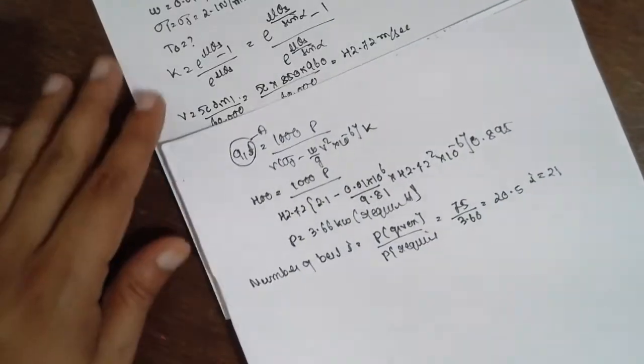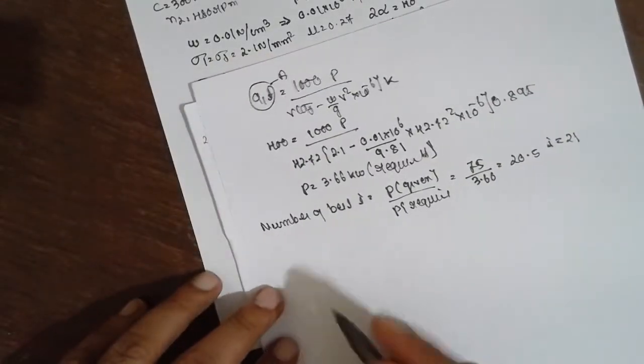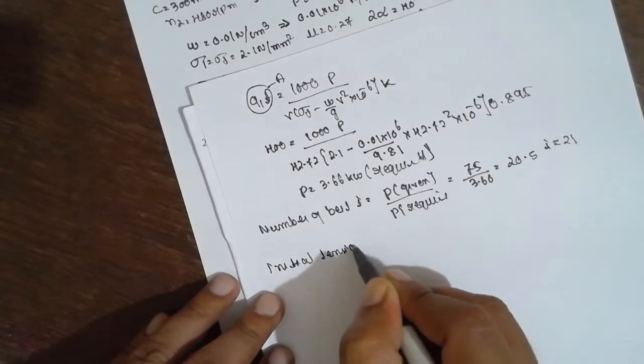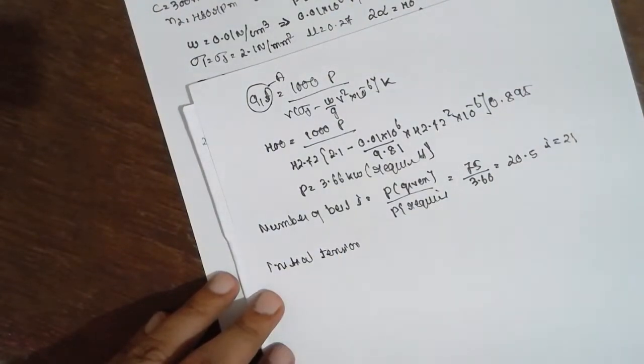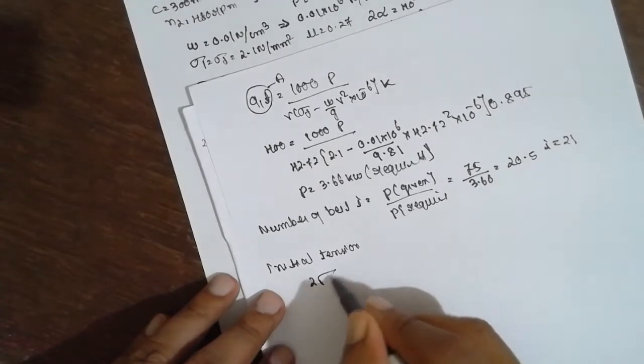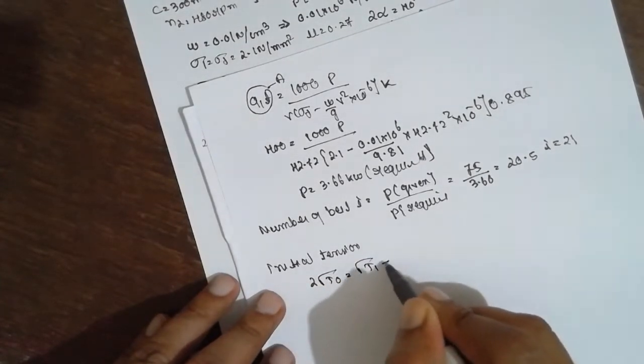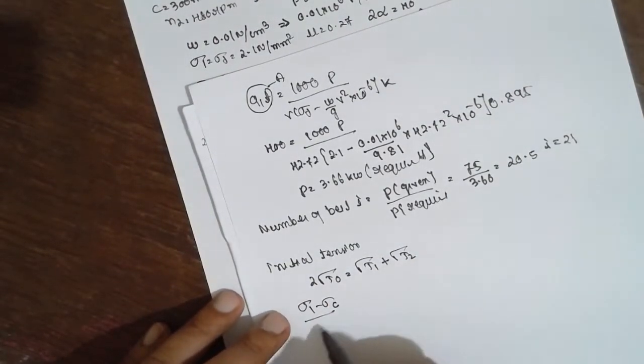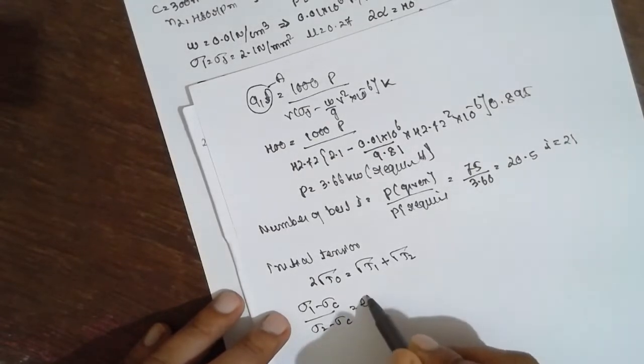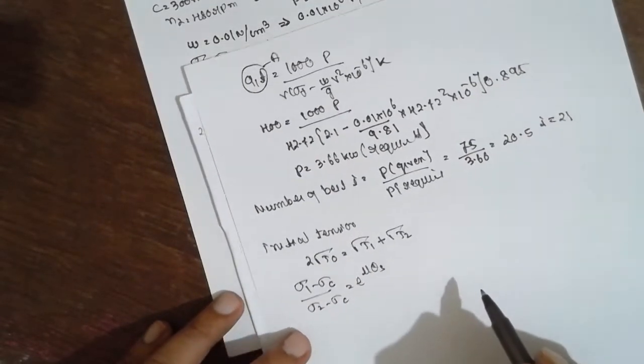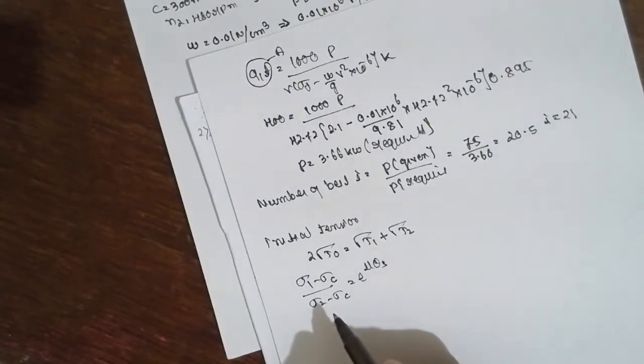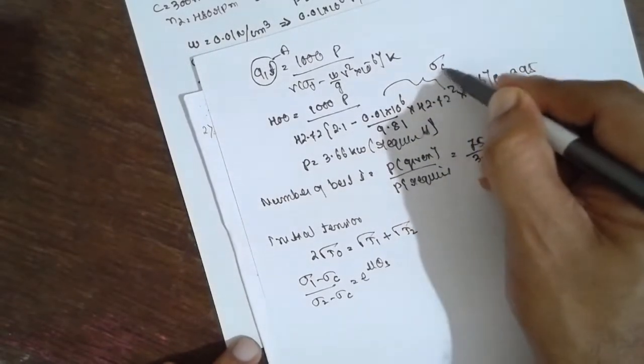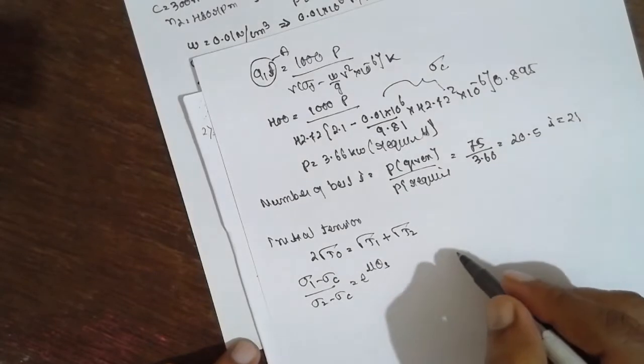Now we are focusing upon the initial tension. 2*T0 is equal to T1 plus T2. Formula will be (sigma_1 - sigma_C)/(sigma_2 - sigma_C) = e^(mu*theta_s). What is sigma_C? Sigma_C is nothing but the combination of this one is called as sigma_C.